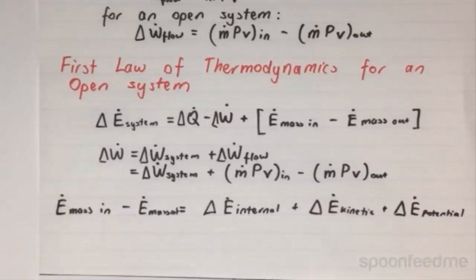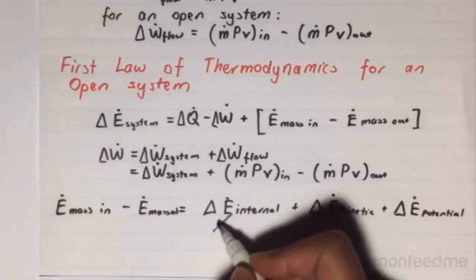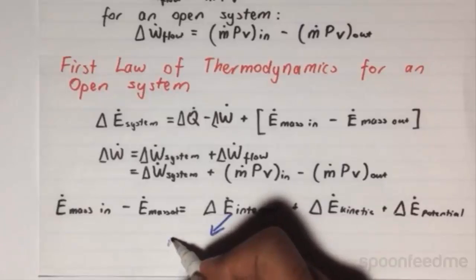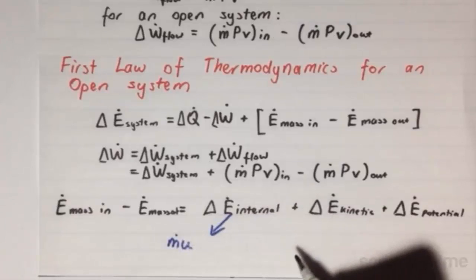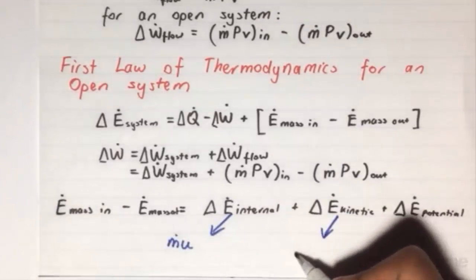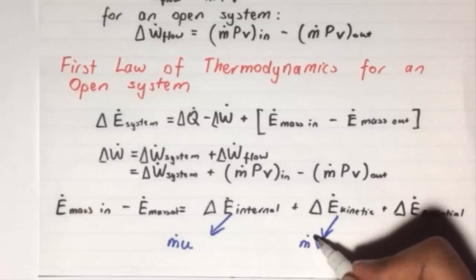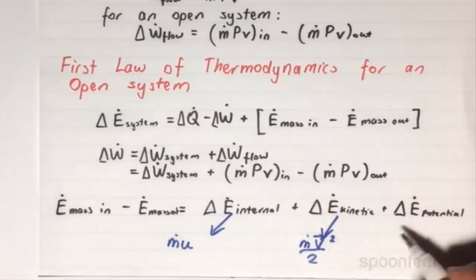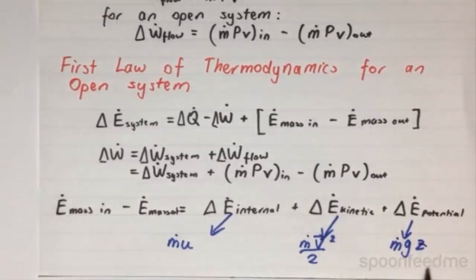If we look at this thermodynamically, this will be ṁu. This will be ṁv²/2. And this will be ṁgz, where z is the change in the elevation of the substance. We don't use h here for a reason that will become obvious later.